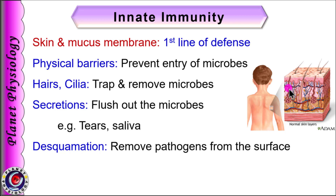All the surfaces of our body, whether external or internal, are covered either by skin or by the mucous membrane. They prevent entry of pathogens into the body. Also hairs, cilia and various secretions like mucus, tears, saliva etc. trap the microbes and help to remove them from the body surfaces. Natural processes like regular desquamation also removes pathogens from the skin surface. Hence, the loss of these barriers — as due to burns or other injuries — leads to infections and even septicemia.